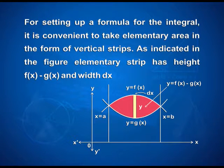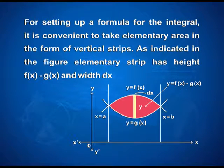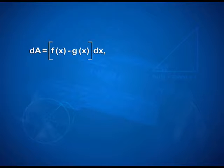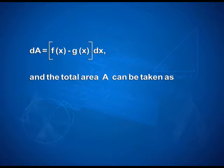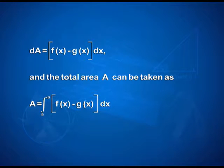For setting up a formula for the integral, it is convenient to take elementary area in the form of vertical strips. As indicated in the figure, the elementary strip has height f(x) minus g(x) and width dx, so that the elementary area dA is equal to [f(x) minus g(x)] dx, and the total area A is equal to integral from a to b of [f(x) minus g(x)] dx.